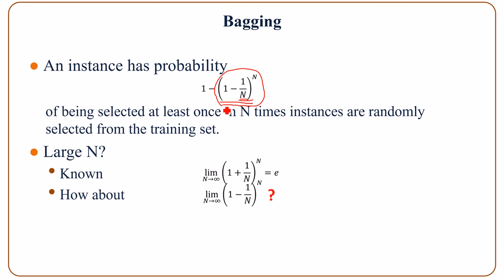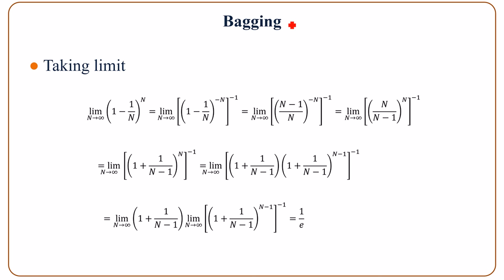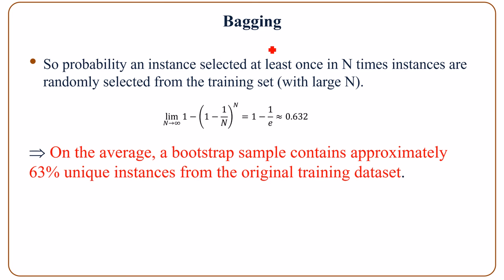When n is large, we can prove that the limit as n approaches infinity of (1 - 1/n)^n is 1/e. So the probability of an instance being selected at least once is approximately 63.2%. On average, a bootstrap sample contains approximately 63% unique instances from the original training dataset.